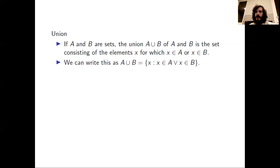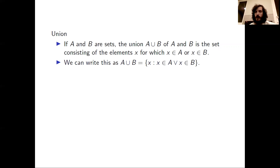And we write it as we do in the second bullet, where we put squiggles around the set. We can write this set as X colon X in A, V, X in B. The colon is a shorthand for the words 'for which', and the V is a shorthand for 'or'.